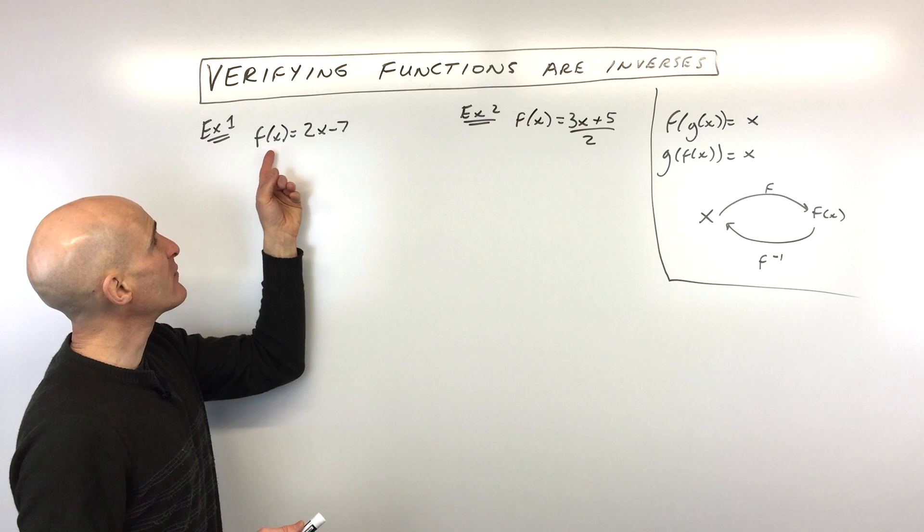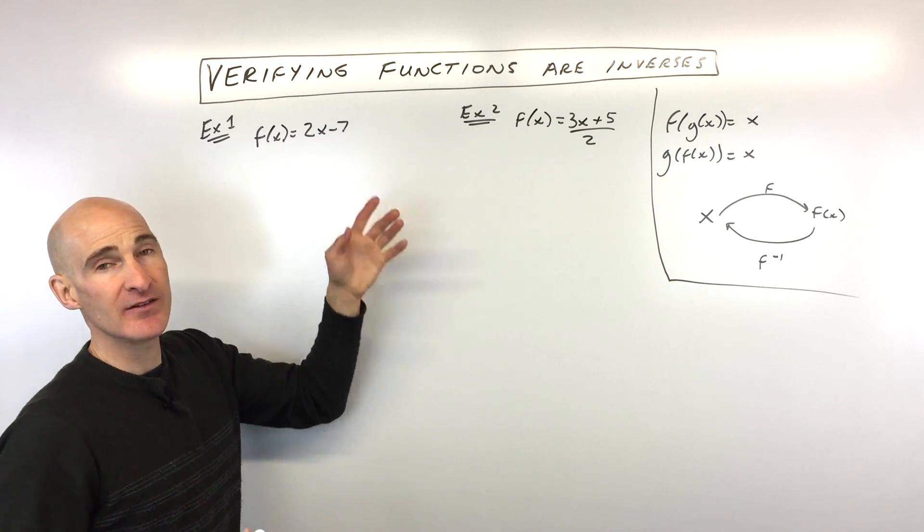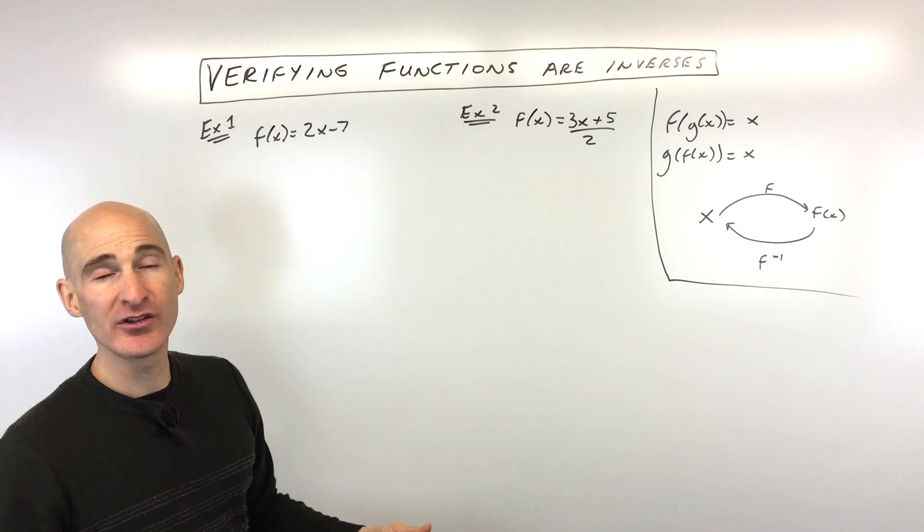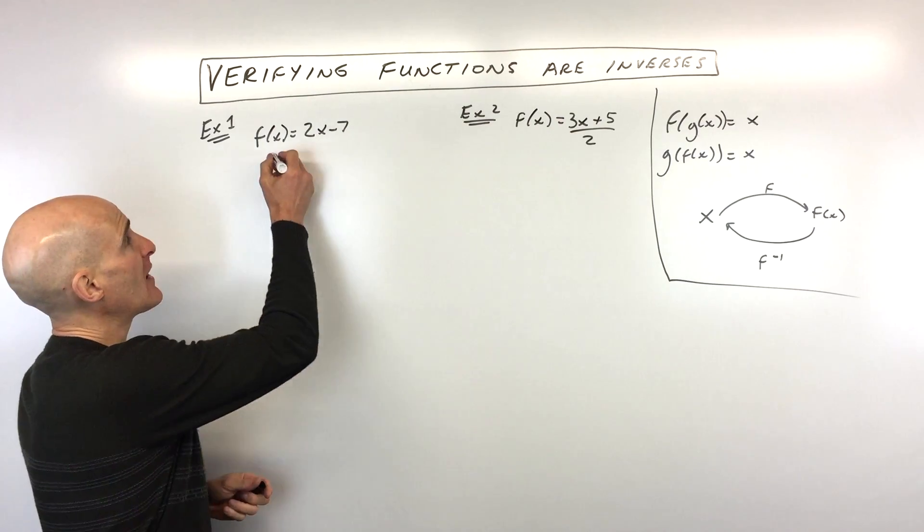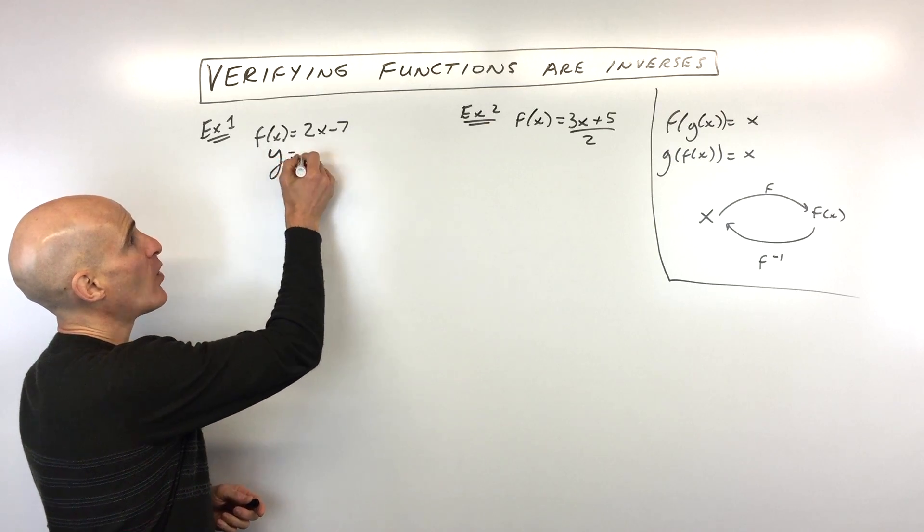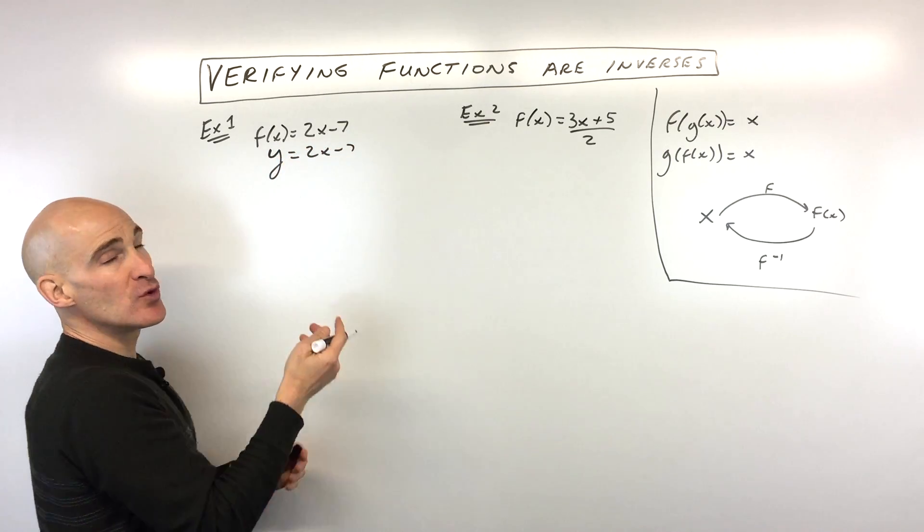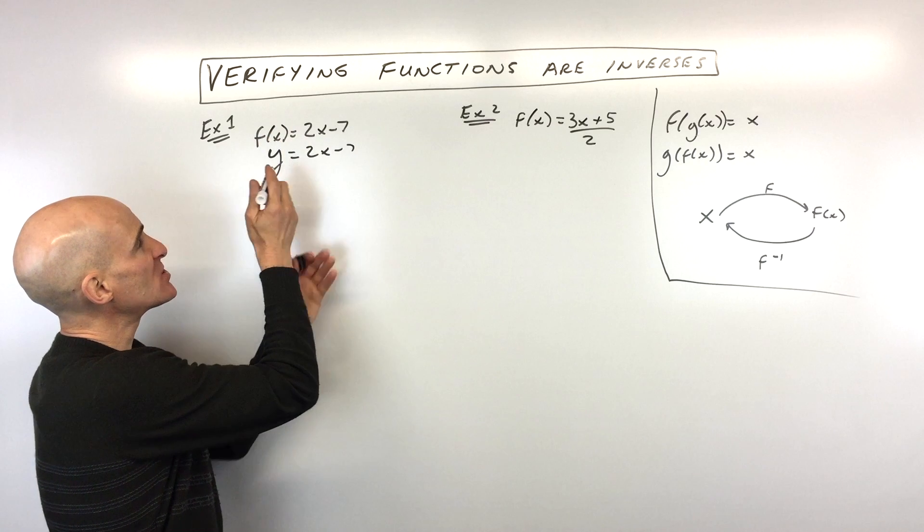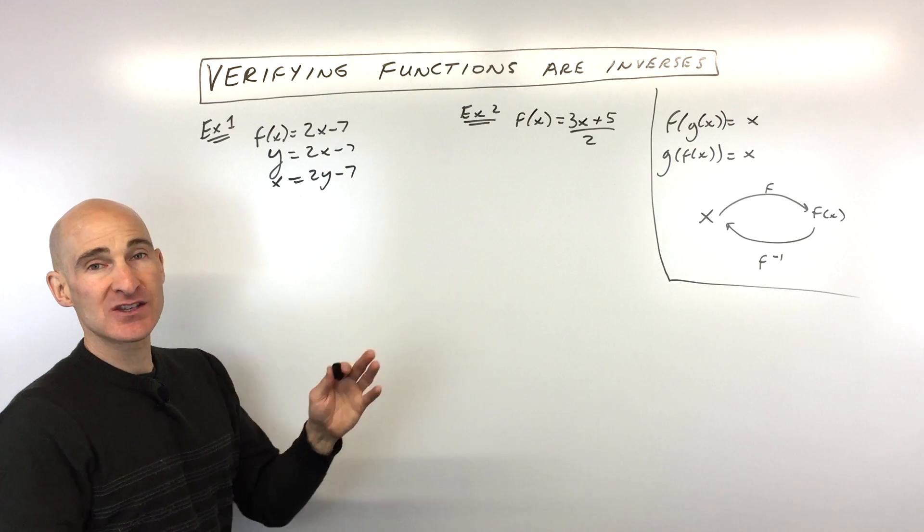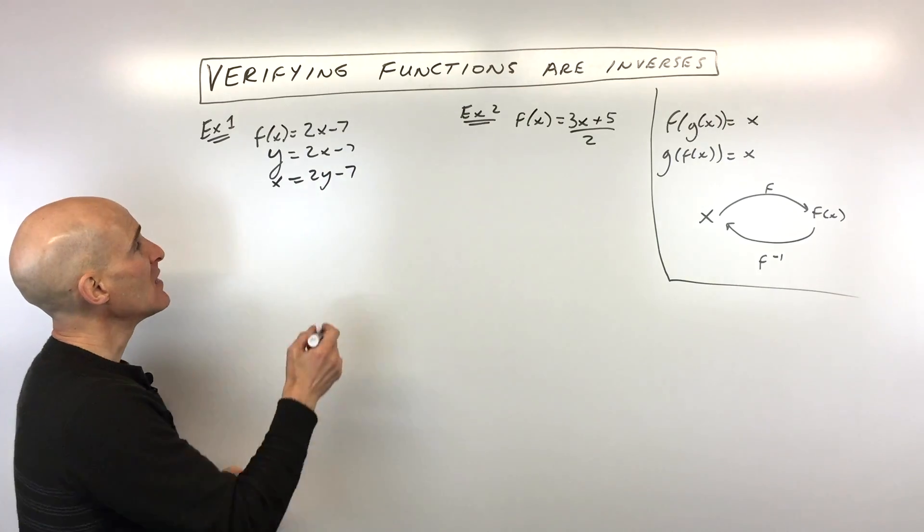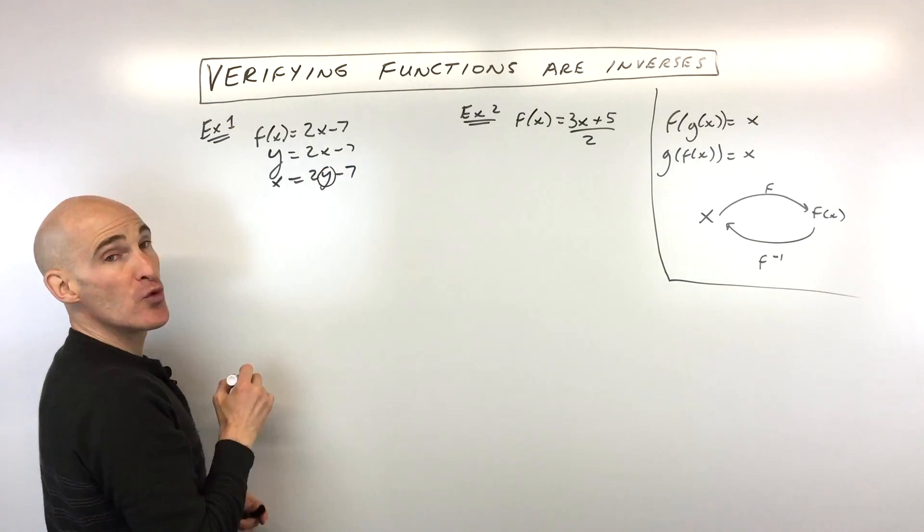So let's do some examples and you'll see how this works. So example number one, we've got F of X equals 2X minus seven. The first thing I want to show you is how do you calculate or find the inverse of this function? Well, F of X you can think of as Y. Y is like your output. But what you do when you find an inverse is you switch the X and the Y. Wherever you see X, you put Y, wherever you see Y, you put X. You just interchange the X and the Y.